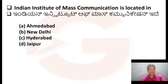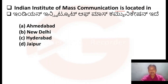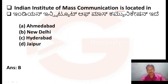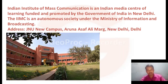Indian Institute of Mass Communication is located in — Option A: Ahmedabad. Option B: New Delhi. Option C: Hyderabad. Option D: Jaipur. The Indian Institute of Mass Communication is located in New Delhi, so Option B is the right answer. Here you can see a picture of the Indian Institute of Mass Communication.